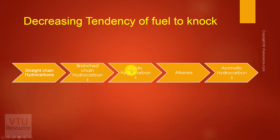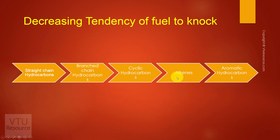As soon as the fuel is obtained from the fractional distillation column, it is sent into the next stage where part of the petrol is converted into either branched chain, cyclic, alkene, or aromatic hydrocarbons by a process known as reformation. This is done in order to increase the octane number and decrease knocking, because higher octane number means lower knocking.